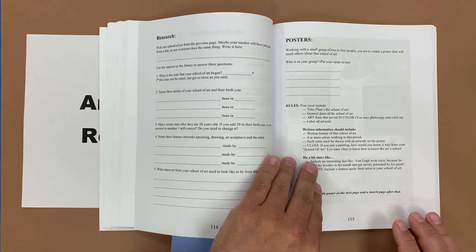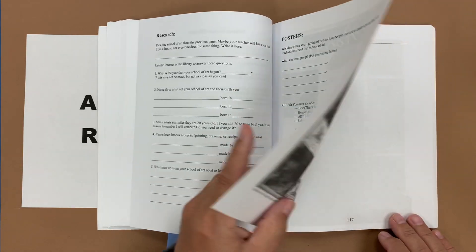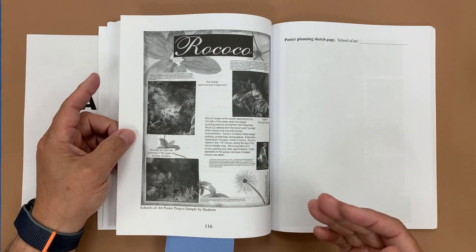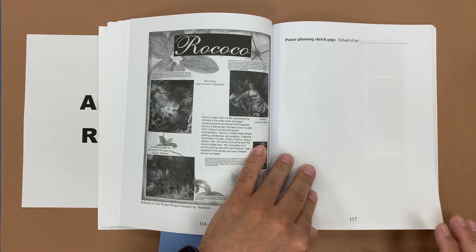Then we have a posters exploration where students could work singletons or they could work in groups of up to four and create a poster that would help other students understand the different schools of art. And then we have a poster planning page in the student edition.